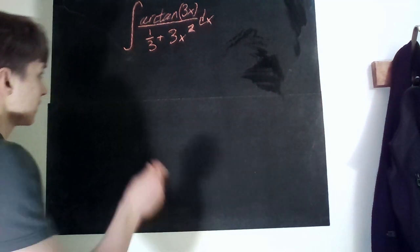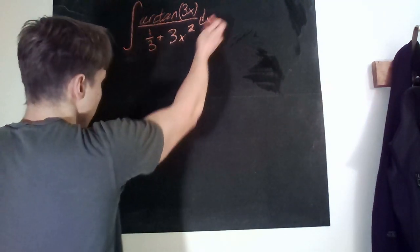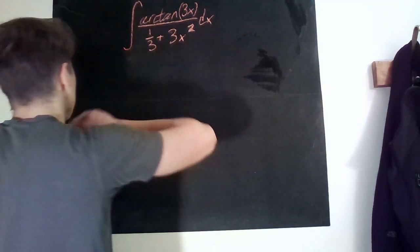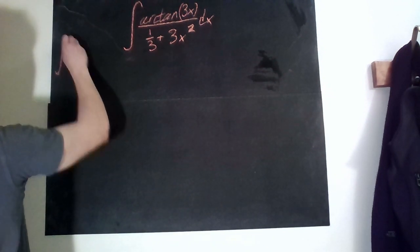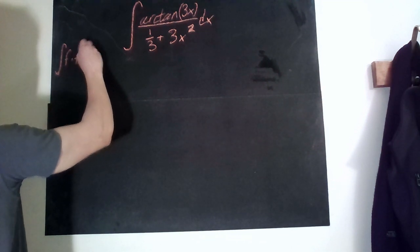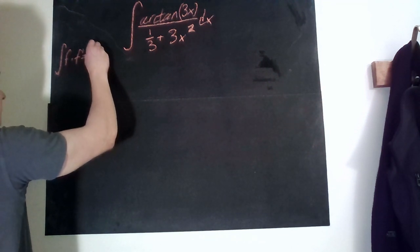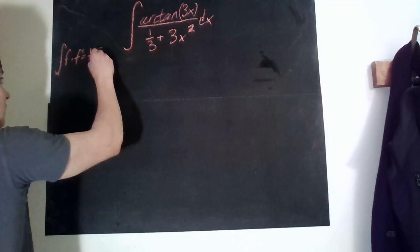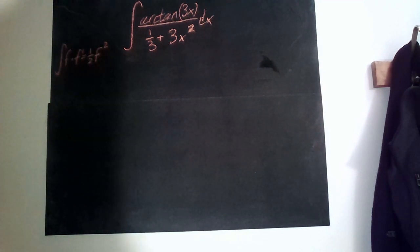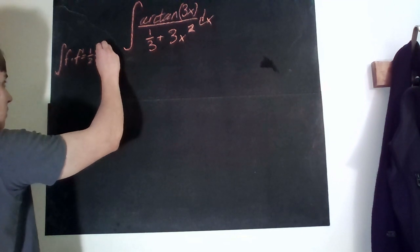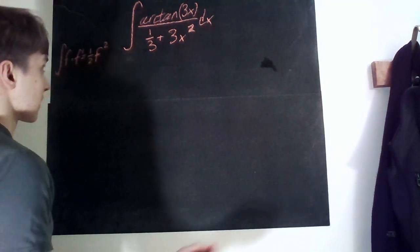If we would have arctan times the derivative of arctan then we would know by the fact that the integral of f times f prime is one half f squared, with respect to x of course. So then we could use that trick.